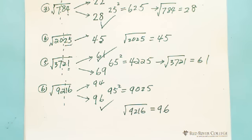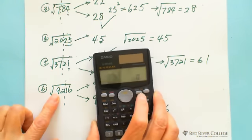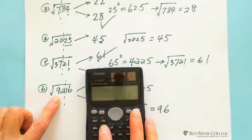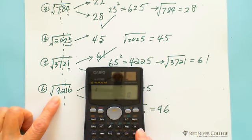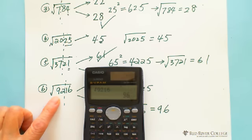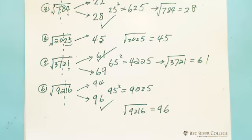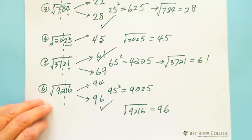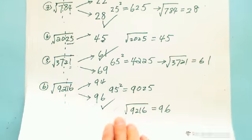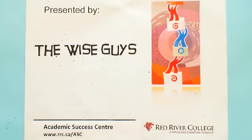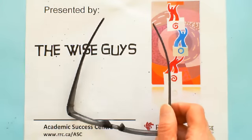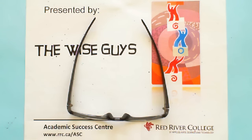You can also use a calculator to verify: the square root of 9216 equals 96. Hopefully you enjoyed the video. This is presented by Wiseguys — thank you very much.